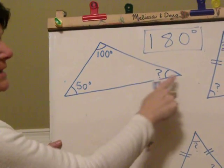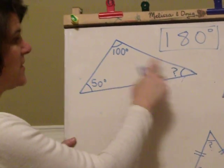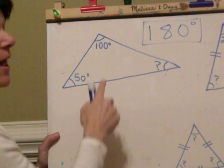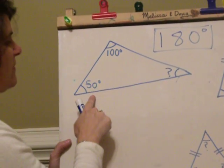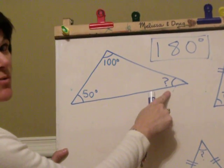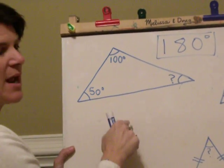So in this scalene triangle that has three different sides, it also has three different angles. One hundred, fifty, and a mystery angle. But we know they all three add to 180.